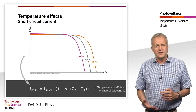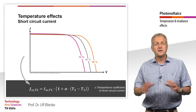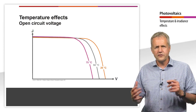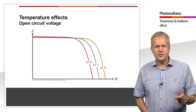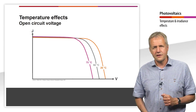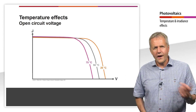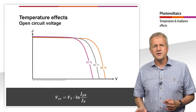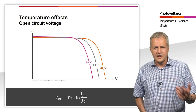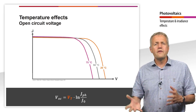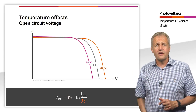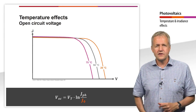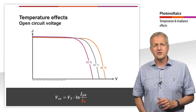A linear dependence on temperature can also be determined for the MPP current, but this results in a different temperature coefficient. Let us now regard the influence of temperature on the open-circuit voltage. We can see in the diagram that temperature has a much stronger effect on the open-circuit voltage than it has on the short-circuit current. If we consider the formula for the open-circuit voltage, at first glance we might think that it increases with increasing temperature due to the temperature voltage. But this is not the case, which is due to the reverse saturation current density. The reverse saturation current density describes the current generated by thermally generated electron-hole pairs, and it increases exponentially with increasing temperature. As a result, VOC decreases as temperature T increases.